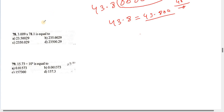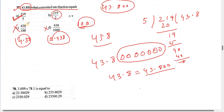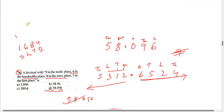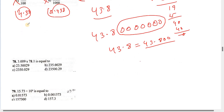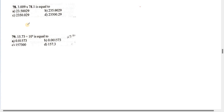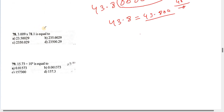I'm going to solve question number 78. Question number 78 is: 3.009 into 78.1 is equal to — I'm going to multiply the number, with options a, b, c, d. I'm going to solve this problem.